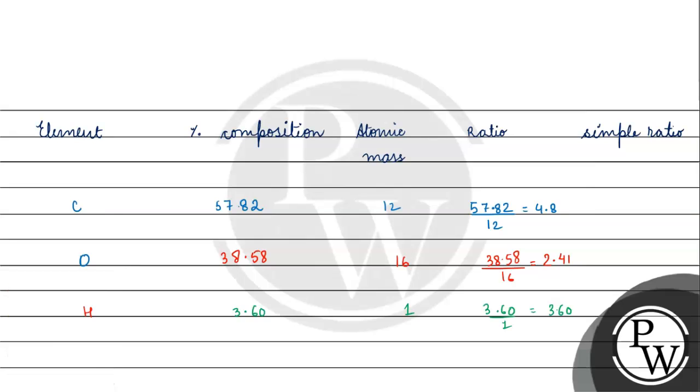If we take the smallest value and divide: 4.8 divided by 2.4, we get 2. Then 2.4 divided by 2.4, we get 1. Then 3.6 divided by 2.4, we get 1.5. So if we multiply by 2, we get the whole number ratio.